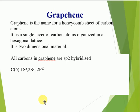Now we will see graphene. Graphene is a honeycomb sheet of carbon atoms — a single layer of carbon atoms arranged in a hexagonal lattice, and it is a two dimensional material. In graphene, all carbons are sp2 hybridized. The atomic number of carbon is 6. Its electronic configuration in ground state is 1s2, 2s2, 2p2, and in excited state is 1s2, 2s1, 2p3. Due to sp2 hybridization, there is formation of a trigonal structure. Due to the presence of one unpaired electron in the 2pz orbital, graphene is a good conductor of electricity.